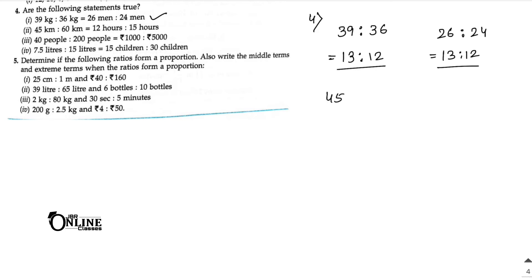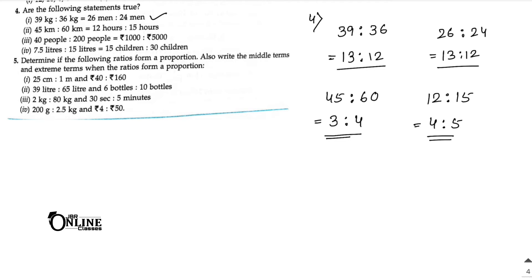Statement two: 45 km is to 60 — divide by 15 — gives 3 is to 4. Next, rupees — dividing gives 4 is to 5. Since 3 is to 4 is not equal to 4 is to 5, this statement is false.